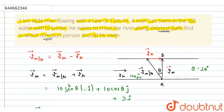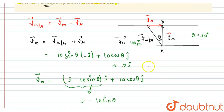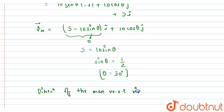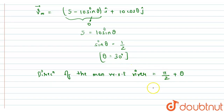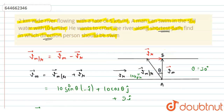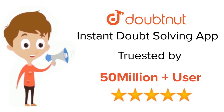Generally, we write the direction of the person with respect to the flow of the river. The direction of the man with respect to the river or flow of river equals pi by 2 plus theta, which is 90 degrees plus 30 degrees, giving 120 degrees. So at this angle, the man must swim with respect to the river in order to cross it via the shortest path.